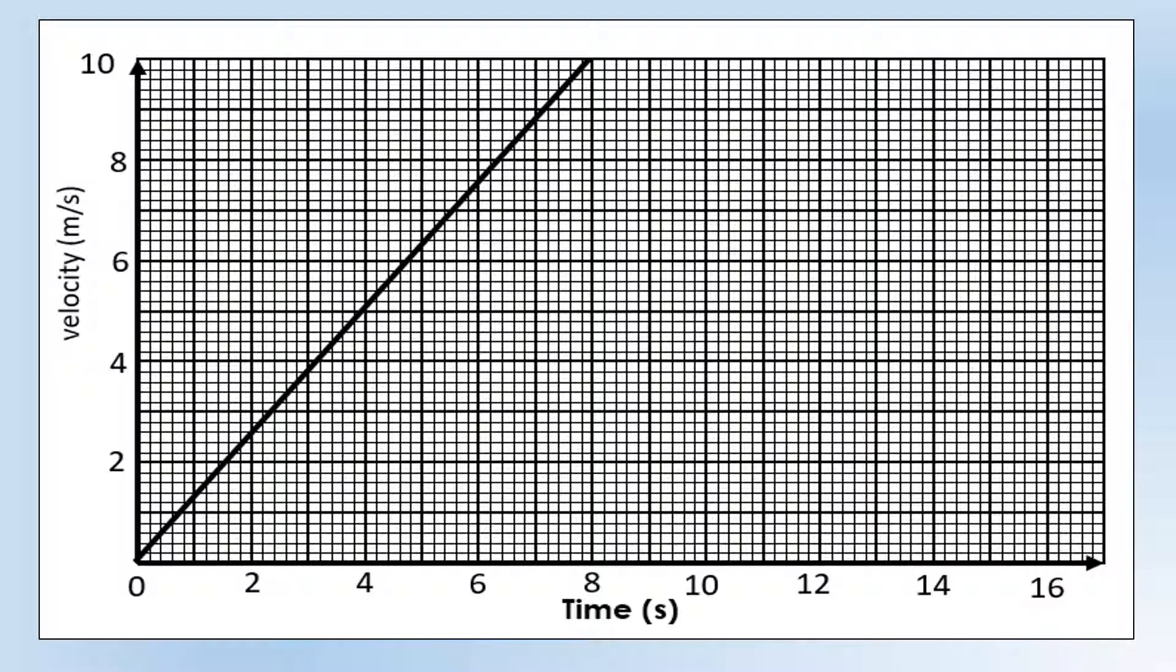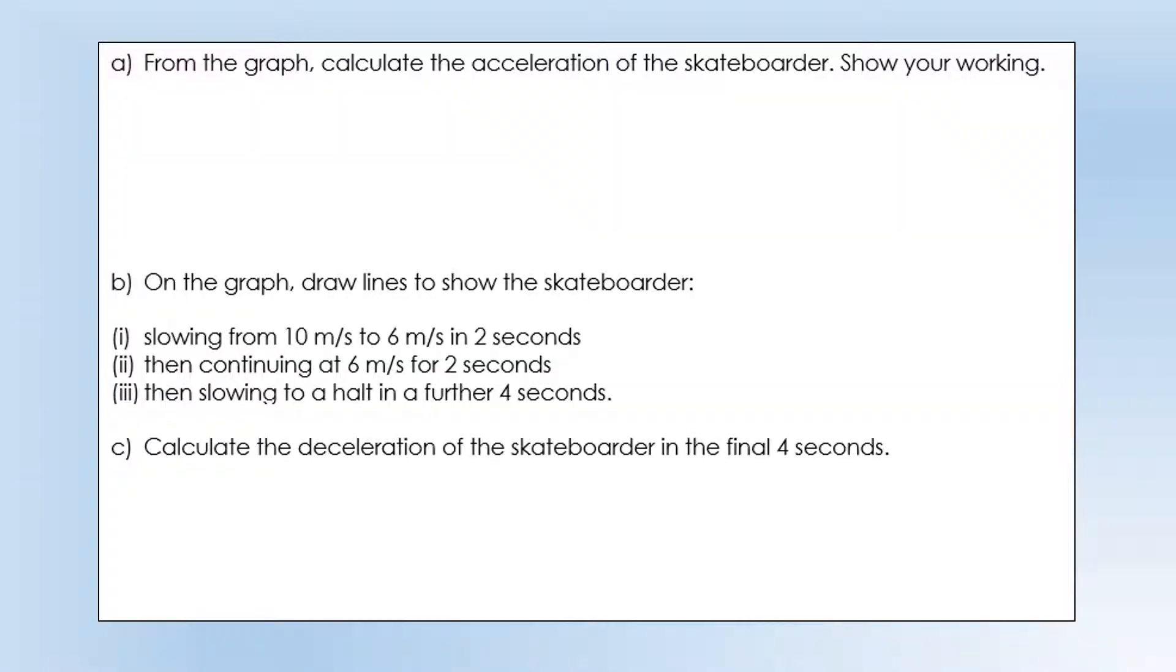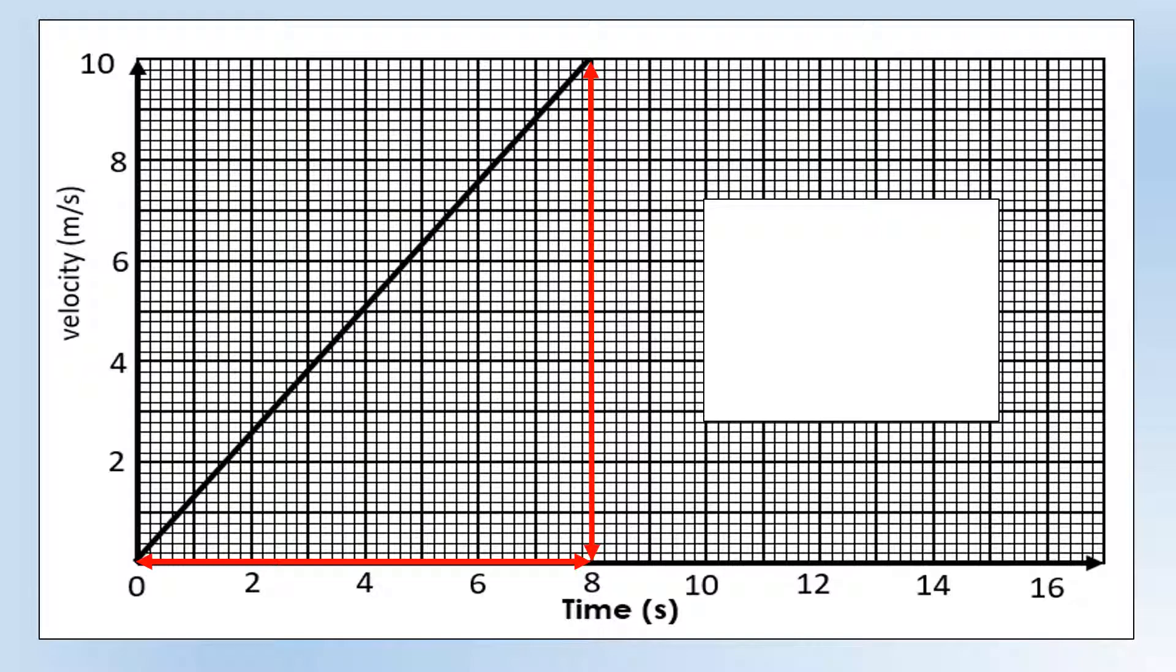We've got a velocity versus time graph, and we can see it's a straight line. So we've got constant acceleration up to a speed of 10 meters per second by 8 seconds. From the graph, calculate the acceleration of the skateboarder. Acceleration is the gradient of the graph, so we're going to do change in velocity divided by change in time, and using the values from the graph is a fairly simple calculation.